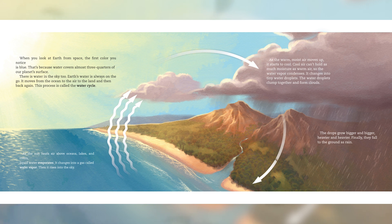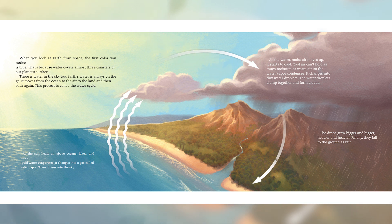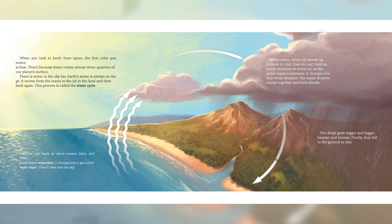As the warm, moist air moves up, it starts to cool. Cool air can't hold as much moisture as warm air, so the water vapour condenses. It changes into tiny water droplets. The water droplets clump together and form clouds. The drops grow bigger and bigger, heavier and heavier, and finally they fall to the ground as rain.